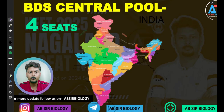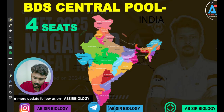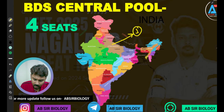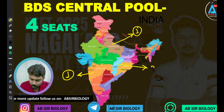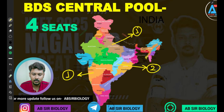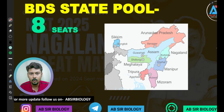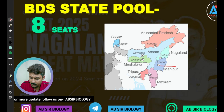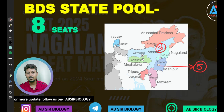For BDS central pool, 4 seats are allotted outside Nagaland: Uttar Pradesh — 1 seat, Maharashtra — 1 seat, Chhattisgarh — 2 seats. For BDS state pool quota, total 8 seats are there: 5 seats available in Manipur RIMS and 3 seats in Assam, making a total of 8 BDS state pool seats.